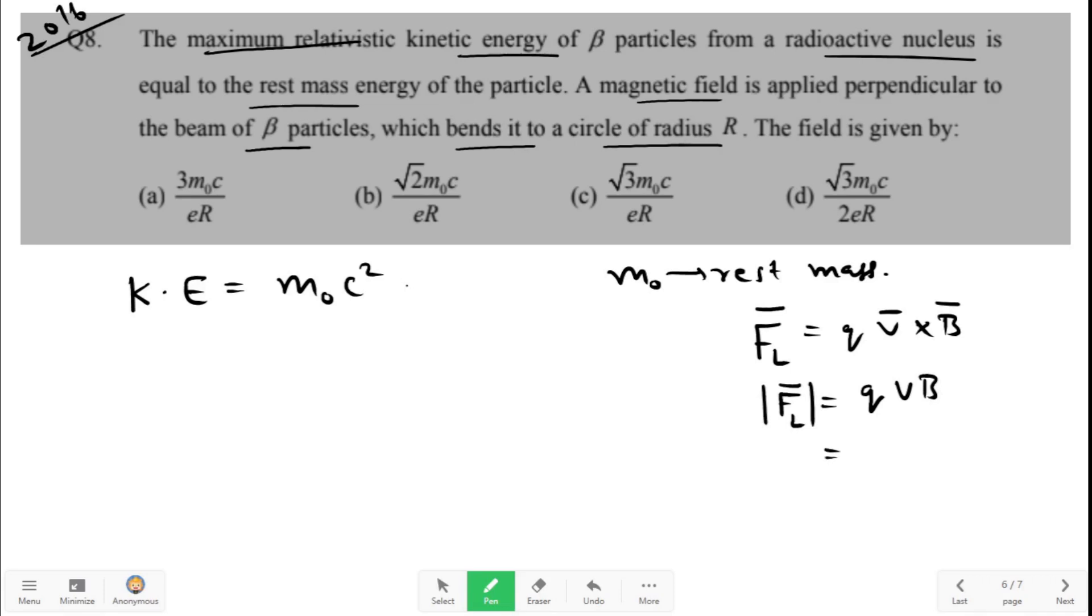So if charge is e, then we have evB. Now this evB is equal to centripetal force. Centripetal force is equal to mv²/R in non-relativistic case, but when it comes to relativistic cases we have a gamma factor extra.